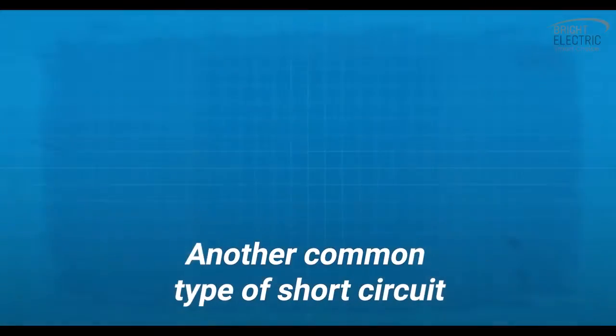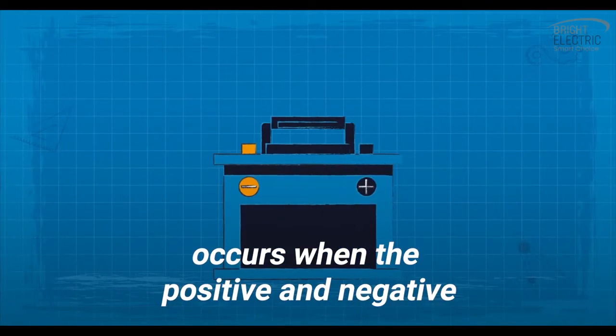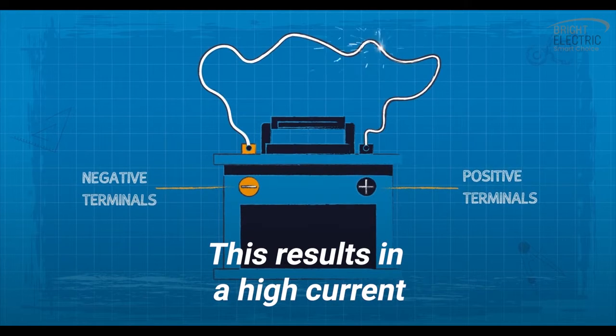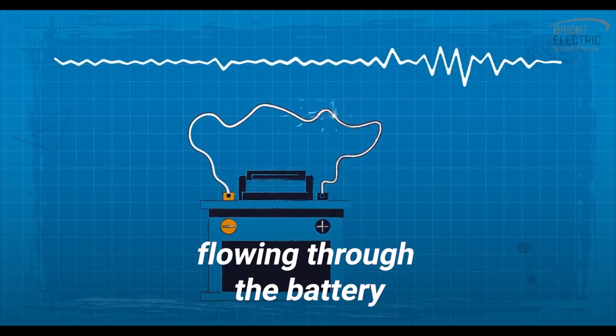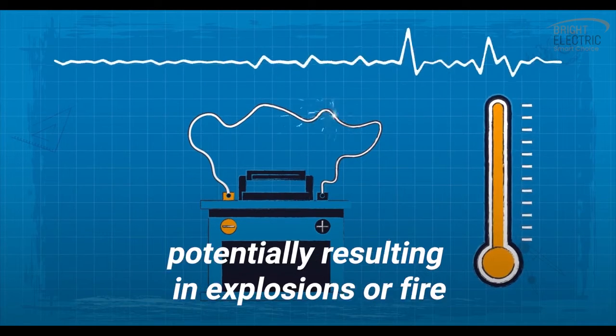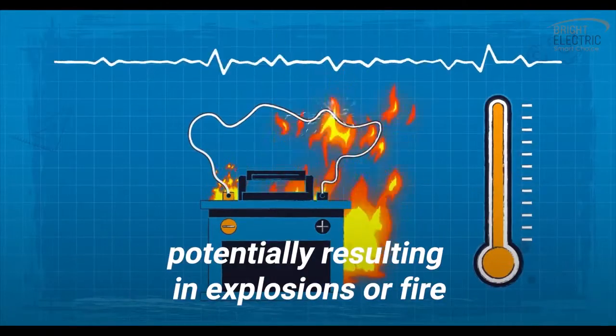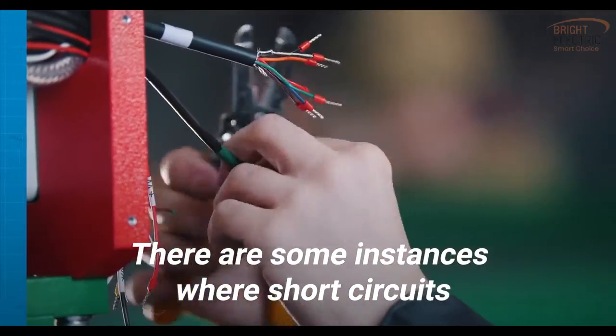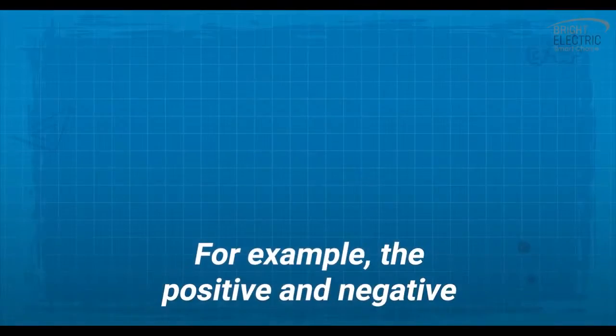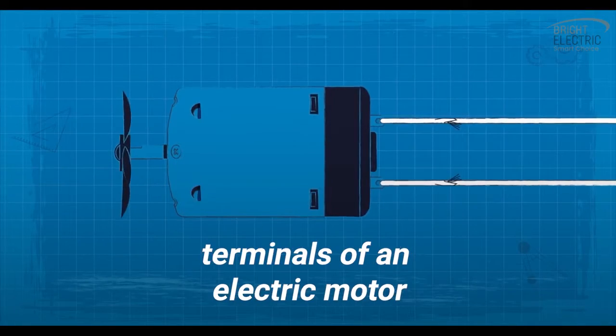Another common type of short circuit occurs when the positive and negative battery terminals are connected by a wire. This results in a high current flowing through the battery and getting very hot very quickly, potentially resulting in explosions or fire.